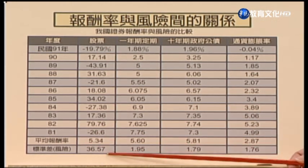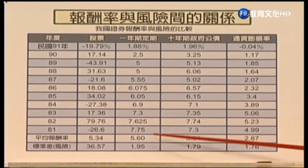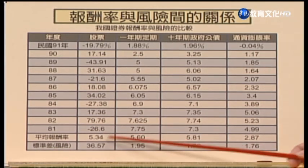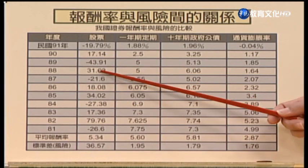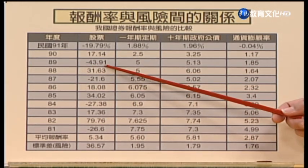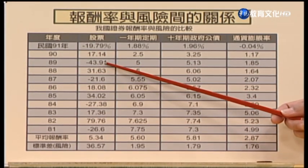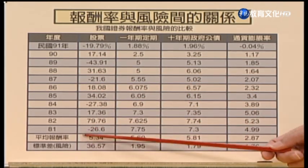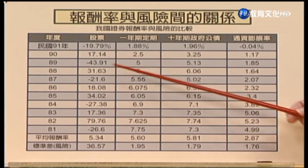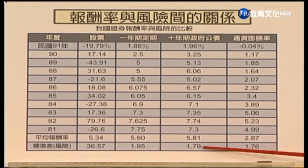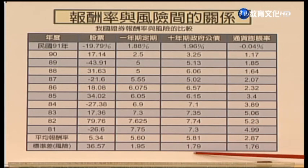接下來看台灣的情況。從民國81年到91年，股票平均報酬才5.34%，但標準差很高36.57%；一年期定存標準差很低，平均報酬5.6%反而比股票高。同學可能覺得奇怪，因為這期間出現民國89年報酬負43%、91年負19%、84年也負27%，這導致報酬不高。所以台灣從民國81年到91年好像沒辦法反映高風險高報酬的理論。